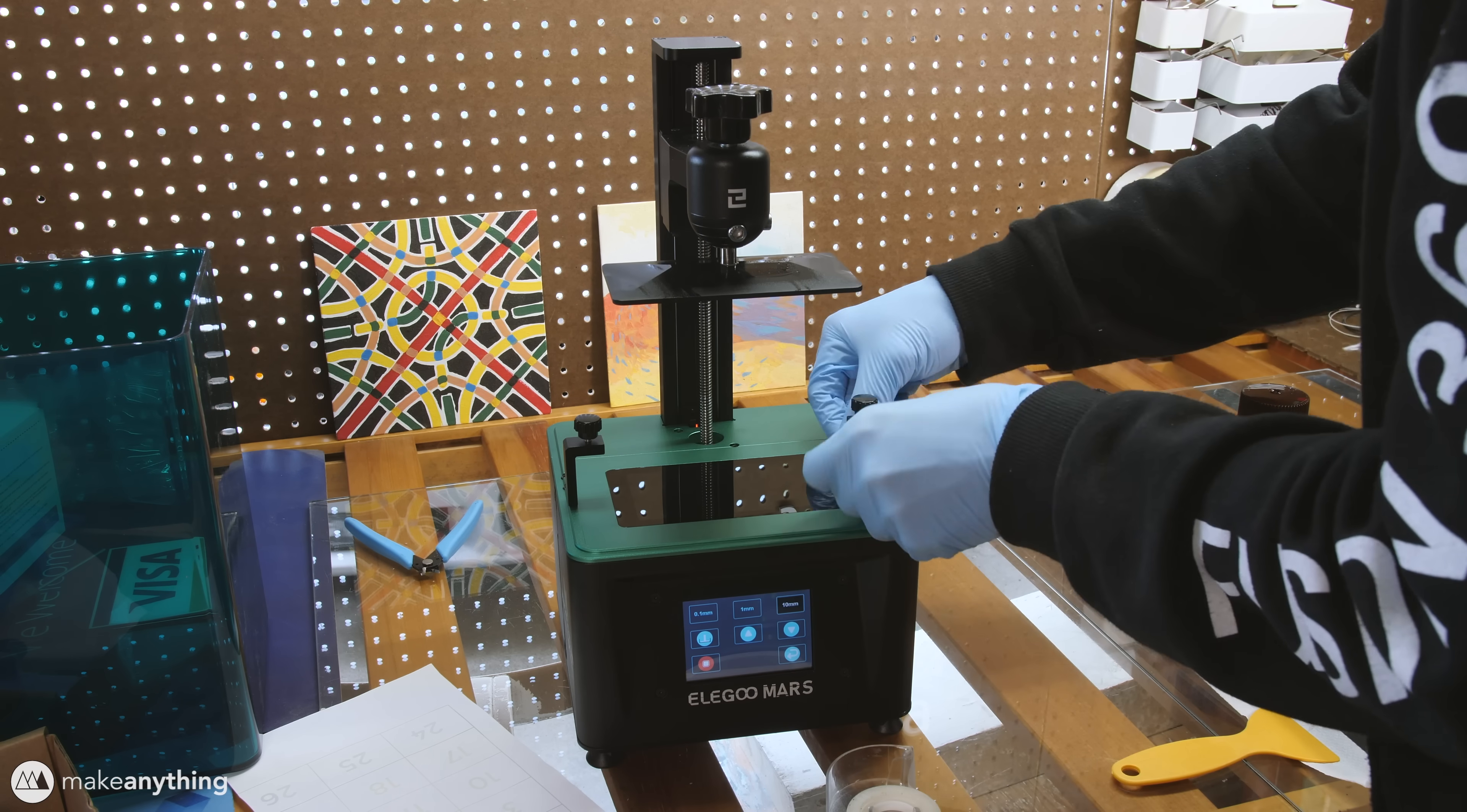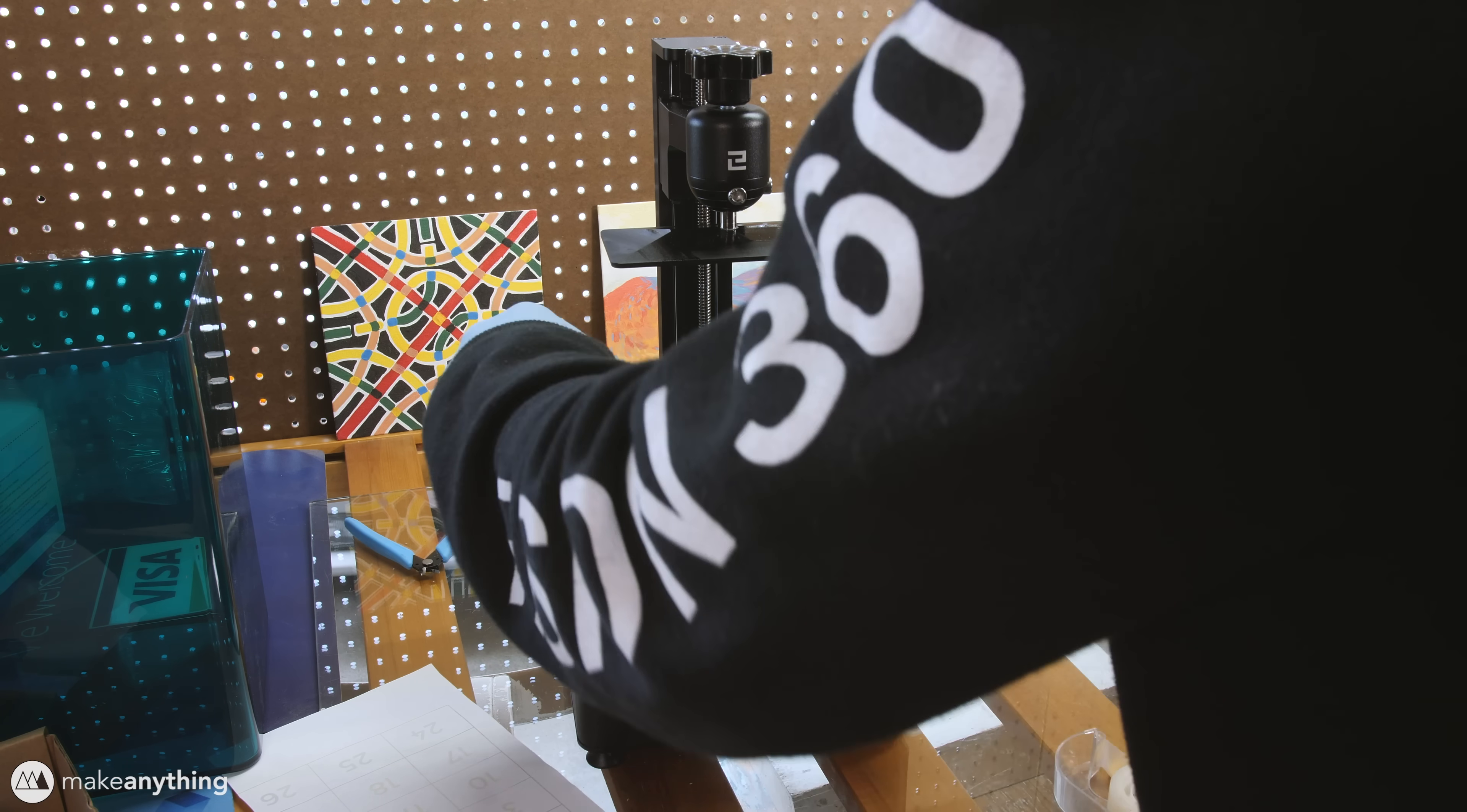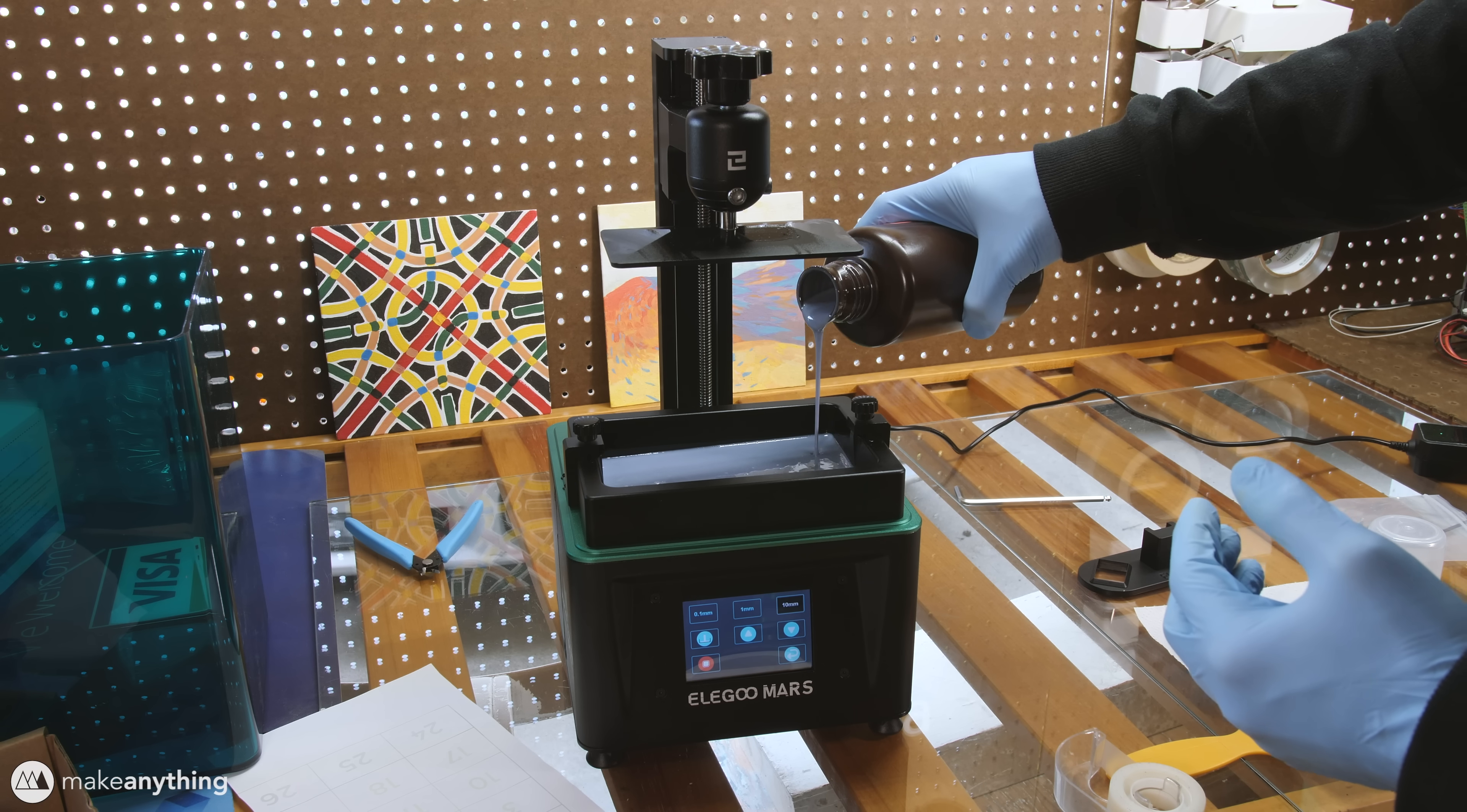One suggestion was to put thin strips of scotch tape on the sides of the LCD screen. This creates a little air gap between the screen and the bottom of the vat and that's meant to release possible suction between the screen and the film which could be causing this problem. So I laid that tape down, put in some new resin and started a print for the third time.